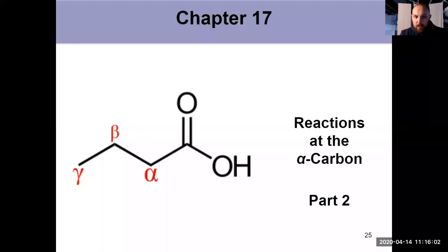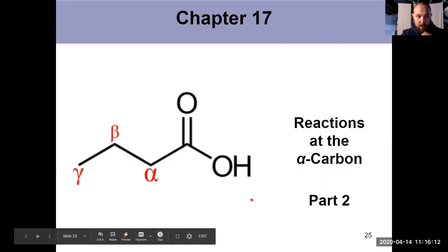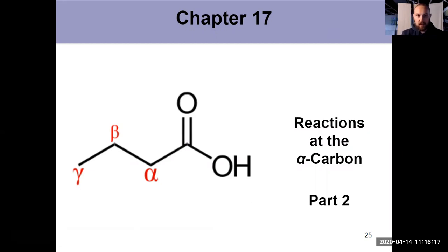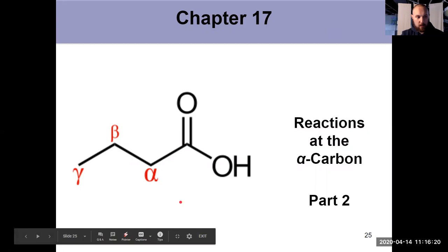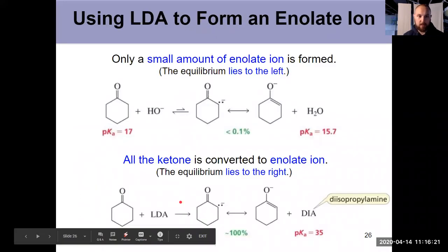In our second video for Chapter 17, we're going to look more in-depth at the enolate ion and its synthetic utility, as well as a little bit of discussion about reactions at the beta carbon as well. So what if we want to form the enolate ion to use in reactions and explore that synthetic utility?